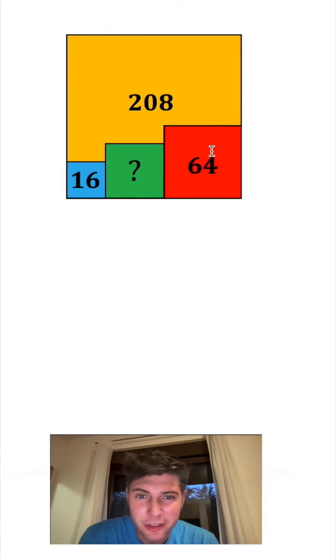Hey guys, so we have four squares right here. Three of them are inside of this larger one. They gave us the area of the blue square, 16, the area of the red square, 64, and the area of this orange region, which is just a part of the larger square, is equal to 208. And the question is, what is the area of this green square?